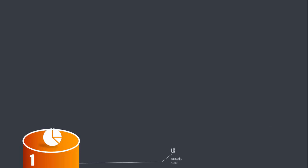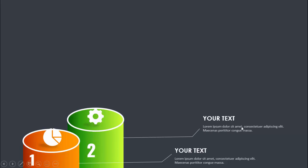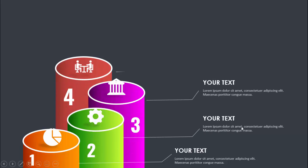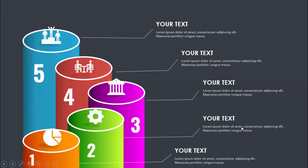In today's tutorial I am going to show you how to create five cylindrical shape infographic slides in PowerPoint. This is how the slide works: when I click it shows option one with the first cylinder shape, the option number, an icon, and detailed text. On the next click it shows option two, then option three, option four, and option five.